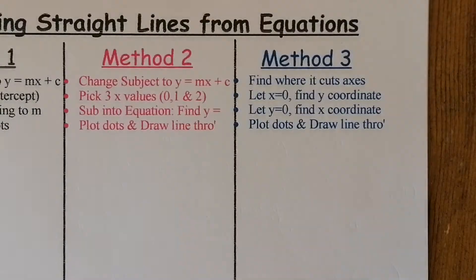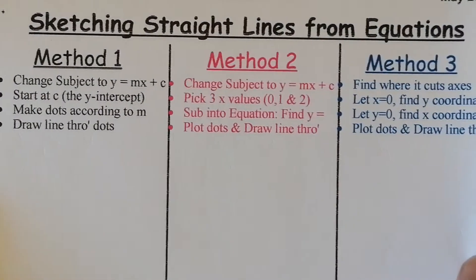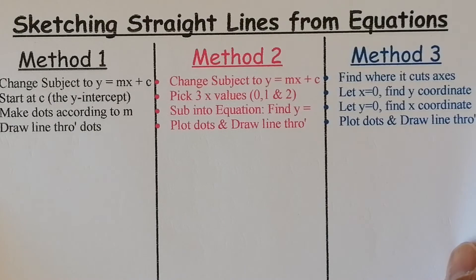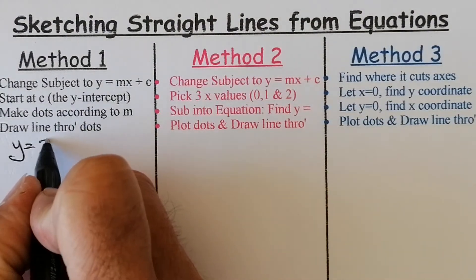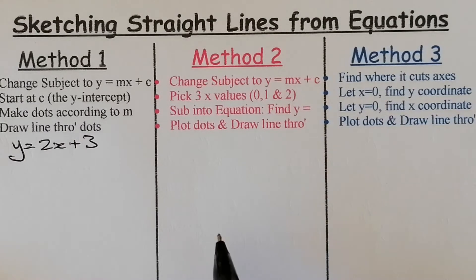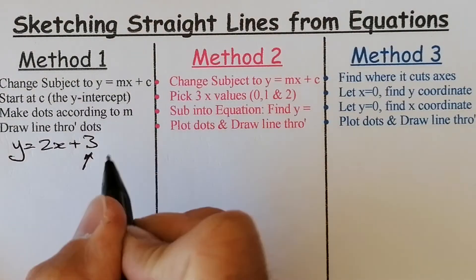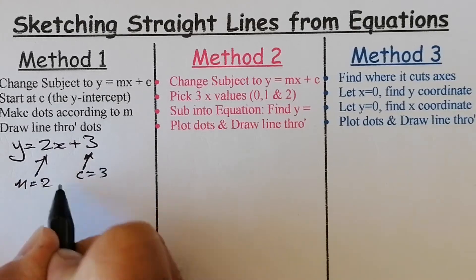Moving on. You can freeze the video and try the next question before I do it. The next equation is y equals 2x plus 3. Try it yourself and pick the method that suits you best. I'm going to go ahead now. For Method 1, I find the c value — c equals 3 — and find my gradient, which equals 2, written as 2 over 1: go along 1, go up 2.